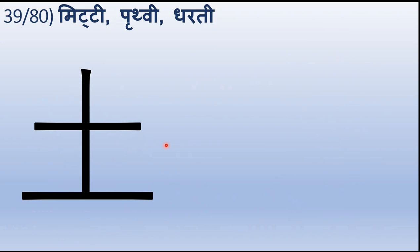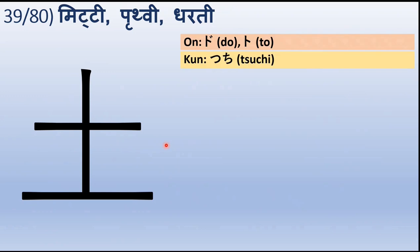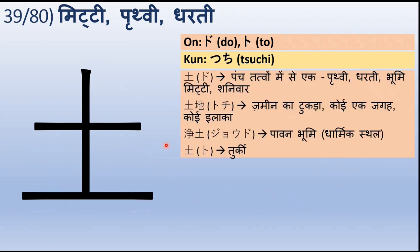Untaliswa kanji hai — mitti, prithvi ya dharti ki. Ye bahut avashyak hai. Onyomi mein isse kehte hain Do ya To, aur kunyomi mein Tsuchi. Do ka arth hai panch tattvon mein se ek yaani prithvi, dharti, bhoomi, mitti. Aur iska prayog Shanivar ke liye bhi kiya jaata hai. Uske baad hai Tochi — Tochi ka arth hai zameen ka tukda, ya koi ek jagah, ya koi ilaaka.